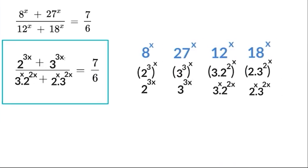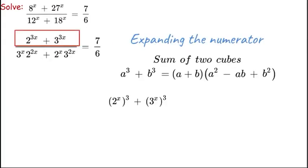Now we have our final combined expression. The numerator has 2^(3x) + 3^(3x). We can reverse the exponents and rewrite these as (2^x)³ + (3^x)³. This allows us to apply the sum of two cubes algebra expression to the numerator.